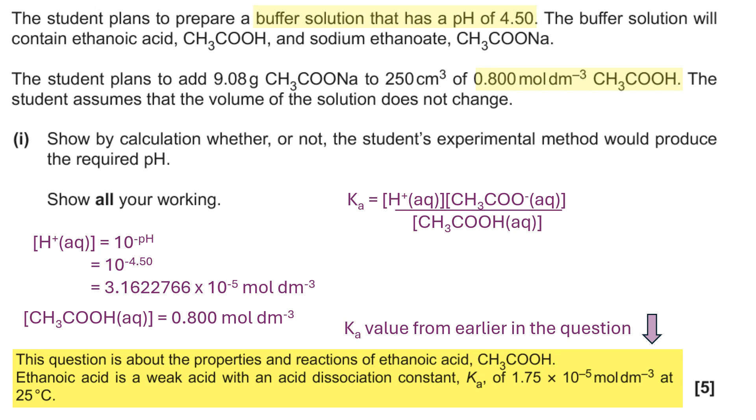What I'm doing is essentially constructing a Ka expression and adding in the things that the question allows me to work out. So far we've got everything apart from the concentration of CH3COO minus. That's going to come from the 9.08 grams being added to 250 centimeters cubed.